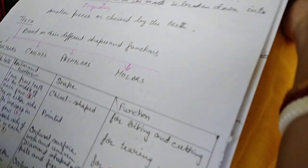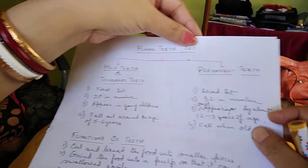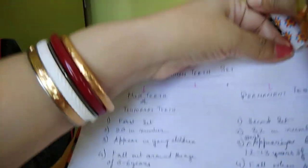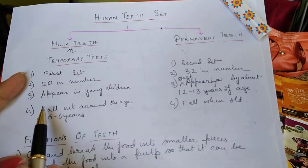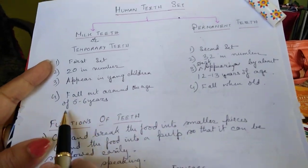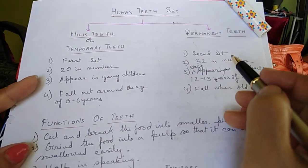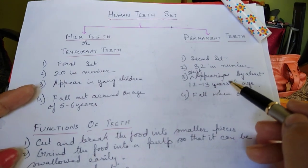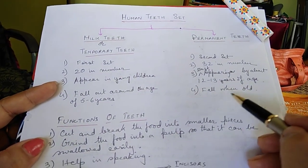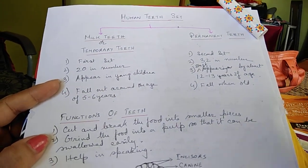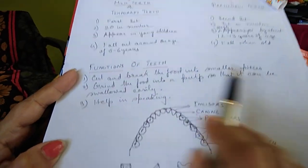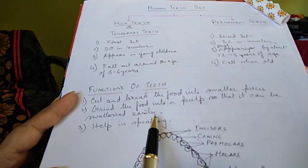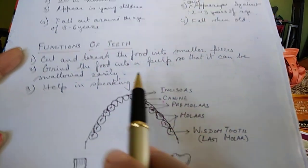Sometimes the wisdom tooth does not come at all. Humans have two sets of teeth: the milk set, which is temporary, consisting of 20 teeth appearing in young children and falling out around age five to six years; and the permanent set of 32 teeth, which start appearing around age 12 to 13 years and fall off when a person becomes old. The functions of teeth are to cut and break food into smaller pieces, grind food into a pulp so it can be swallowed easily, and help in speaking.